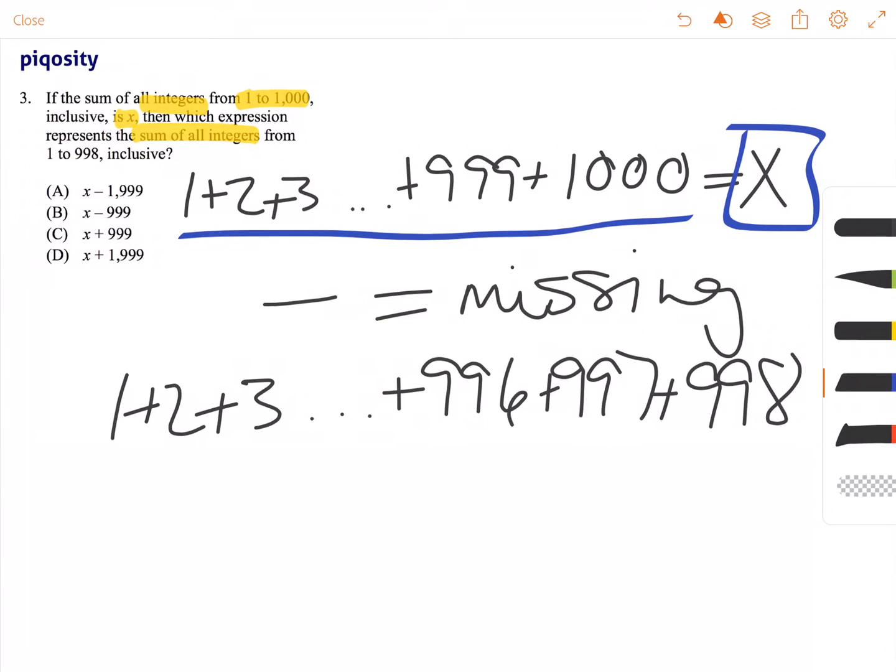And we have this first equation here to work from, so we have all of the values to 1,000 in this first equation, and we have all of the values to 998 in the second equation.